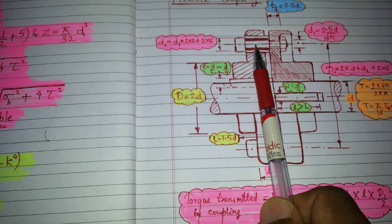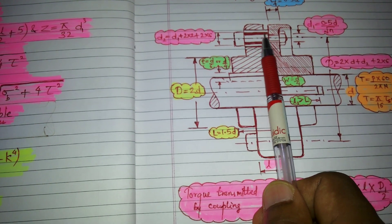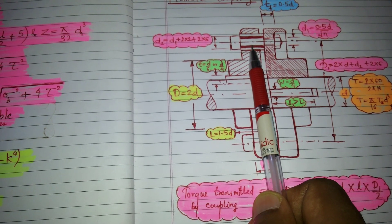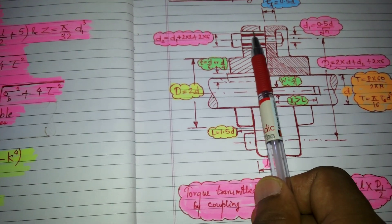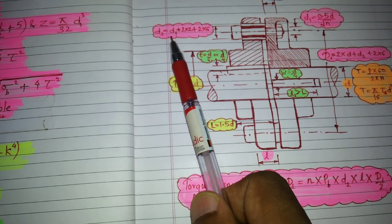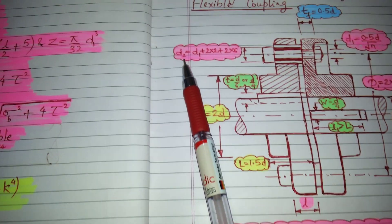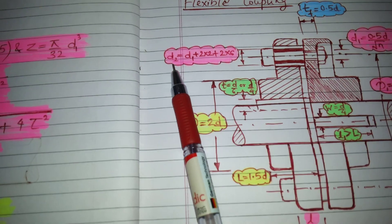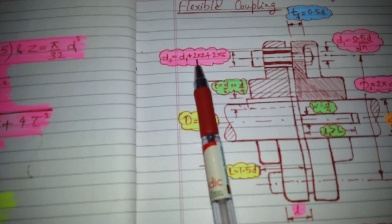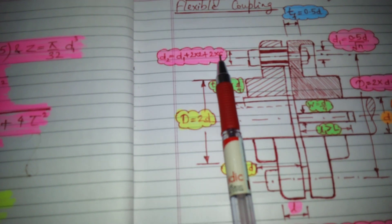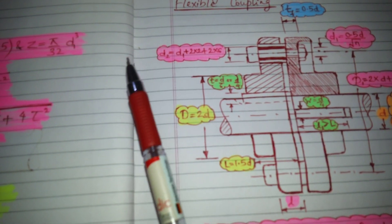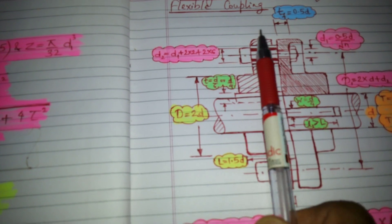Next, for D2, the pin has a brass bush of 2 mm thickness and a rubber bush of 6 mm thickness. Therefore, the diameter of the bush is D2 equals D1 plus 2 into 2 plus 2 into 6. This gives the diameter of the bush or the diameter of the hole.